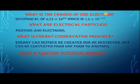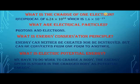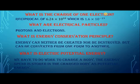What is electric potential energy? We have to do work to charge a body — specifically, to remove the electron from the valence shell. The external energy you spend to remove that electron is stored in the atom as potential energy. As we know, energy cannot be created or destroyed — it is only transferred from one form to another. The energy used to pull the valence electron is stored in the charged body as potential energy.